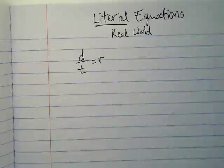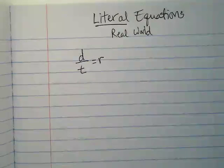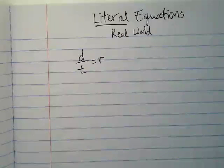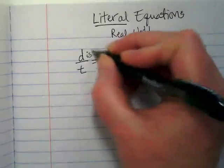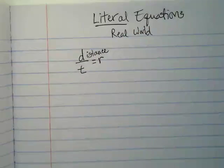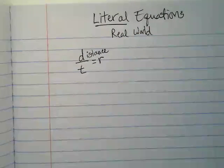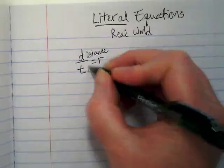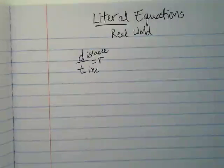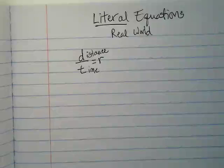What do the variables stand for here? Distance. What is the T? This is what we mean by literal equations. These aren't just random variables, they mean something.